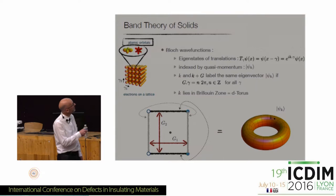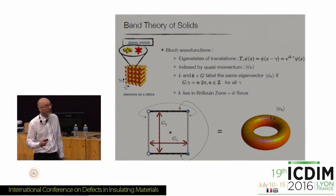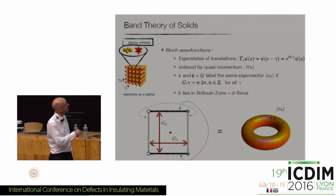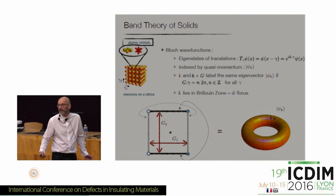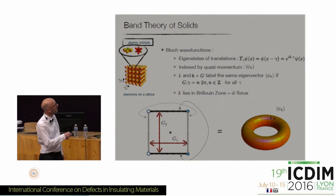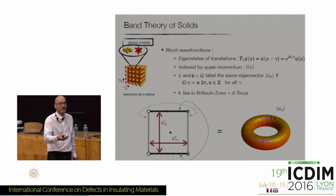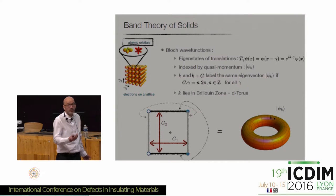What we really do in band theory is identify two momenta that differ by a reciprocal lattice vector — that amounts to considering quasi-momentum only in the first Brillouin zone. You realize that this first Brillouin zone is actually a torus. Why? Because the opposite sides of the first Brillouin zone differ by a reciprocal lattice vector, so you should identify them. If you identify opposite boundaries in every direction, you end up with a surface with no boundary where you always come back to where you started — that's a torus. The first Brillouin zone is a d-dimensional torus.